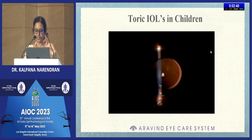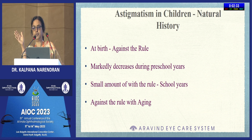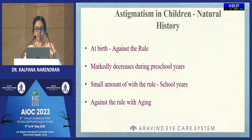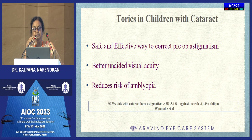Coming to toric IOLs in children: at birth, children usually have against-the-rule astigmatism, which transitions to with-the-rule, and then back to against-the-rule as they get older. Toric IOLs of at least 1.5 diopters definitely have a role in children with cataracts, giving them better unaided visual acuity for distance and reducing the risk of amblyopia.